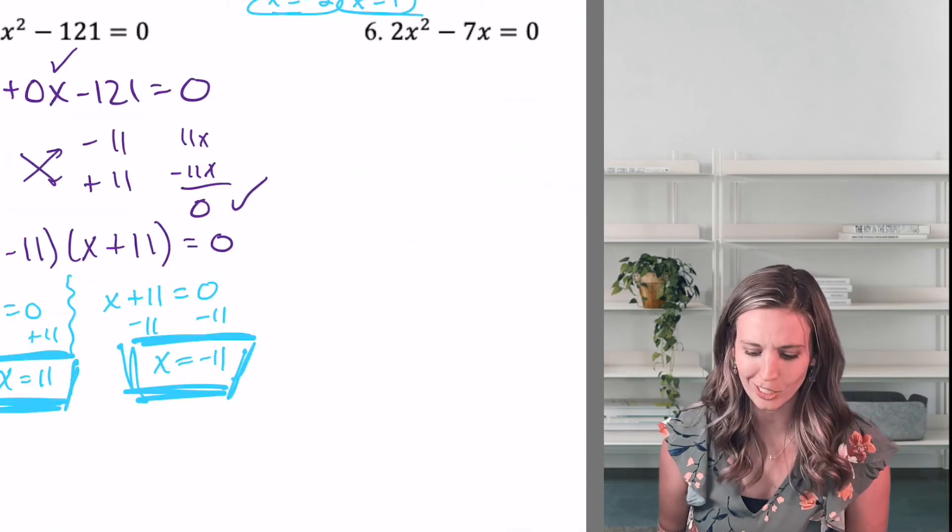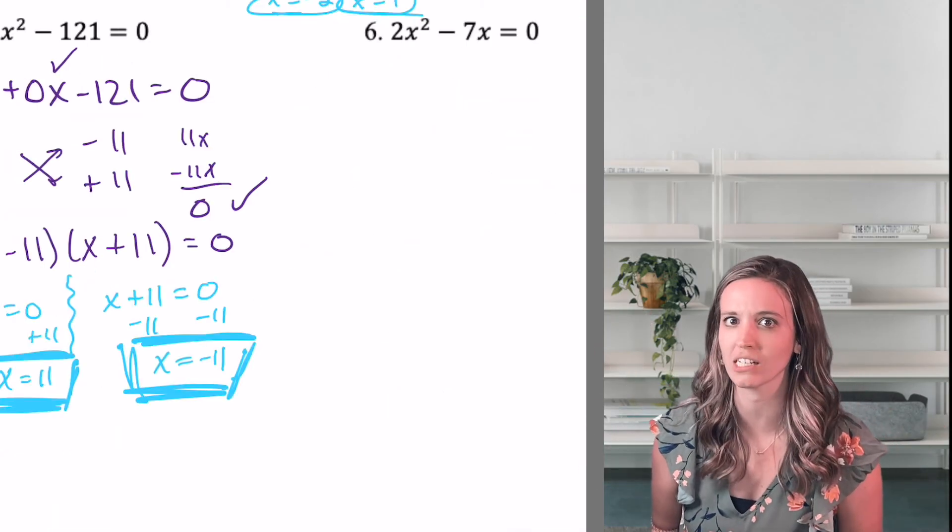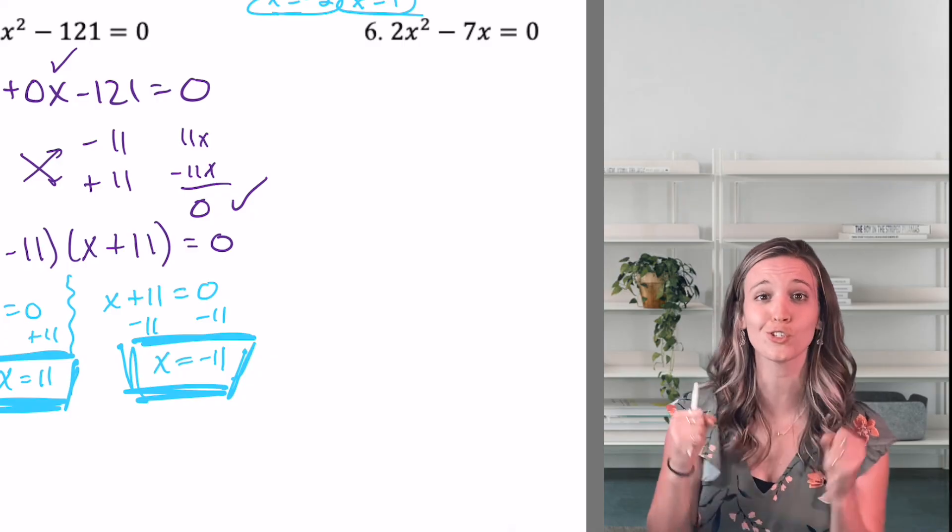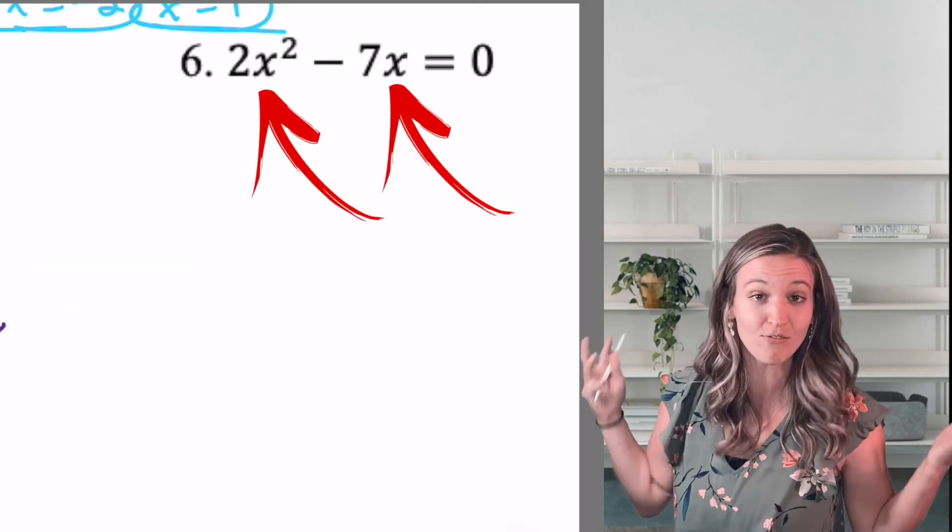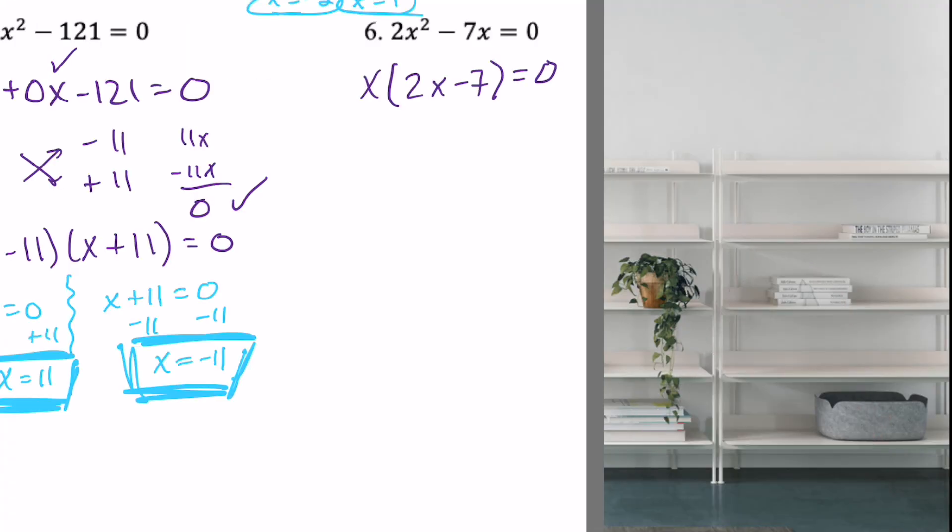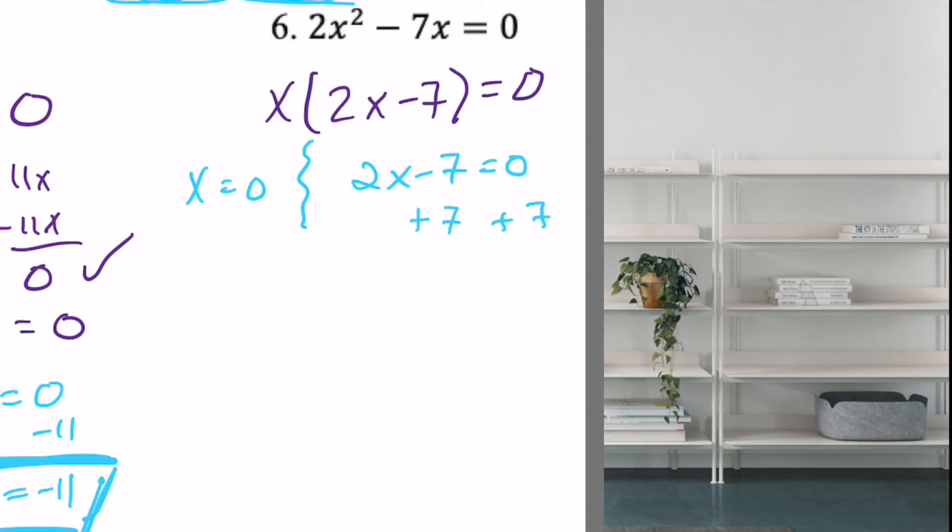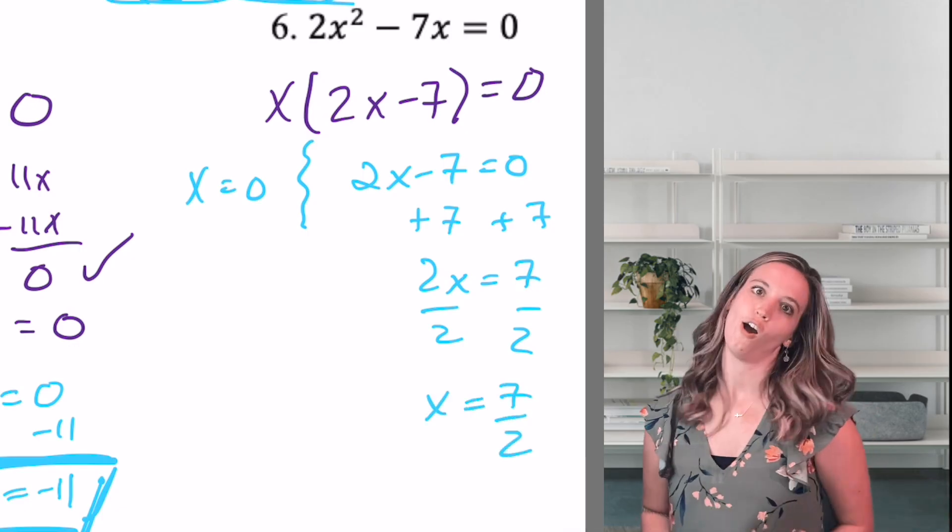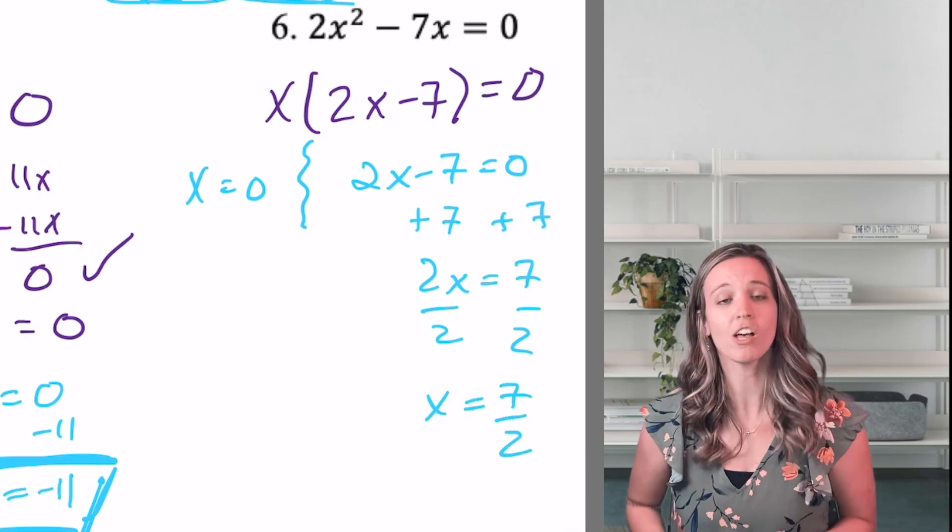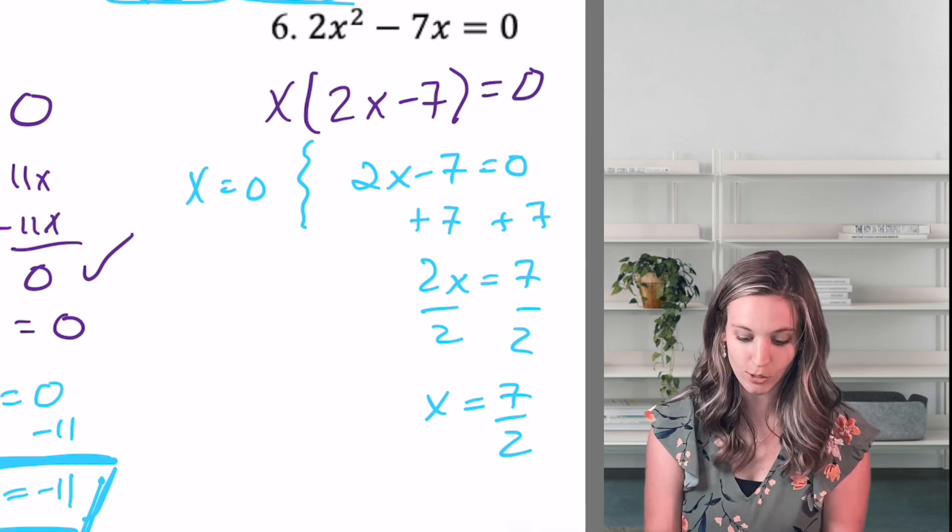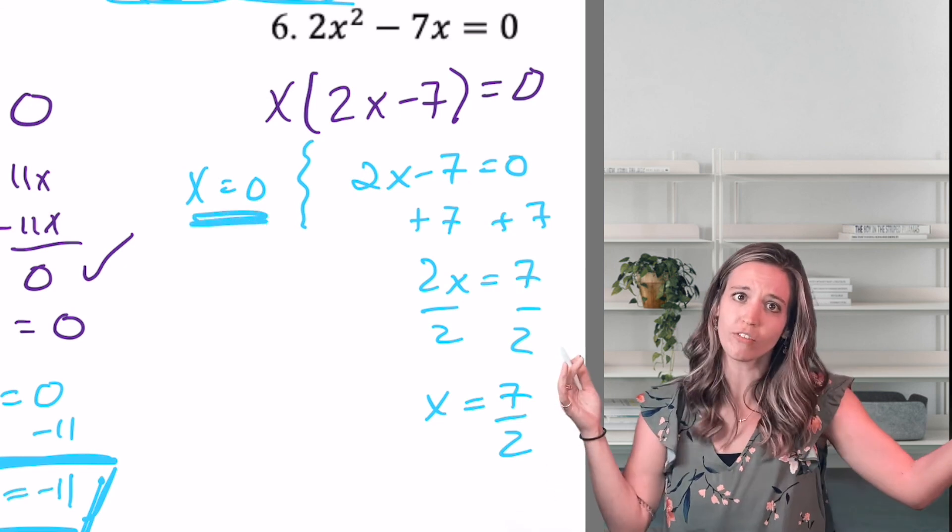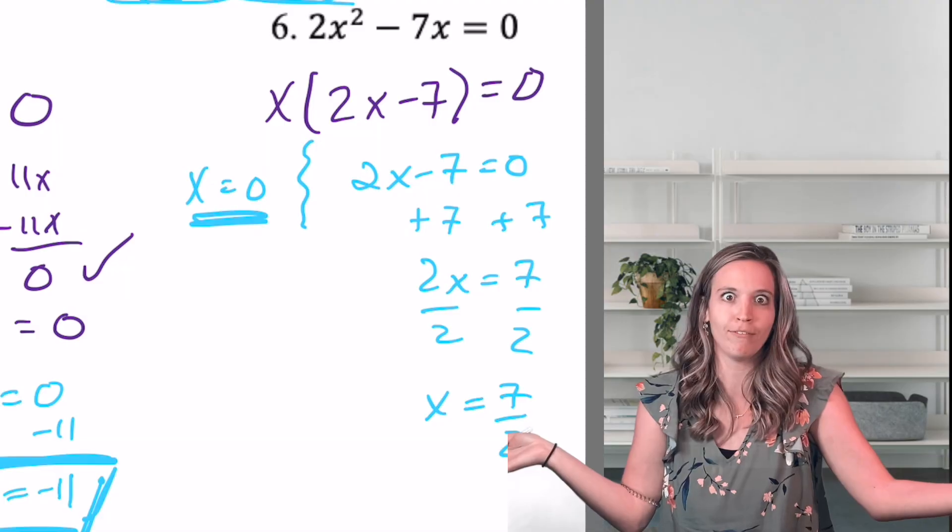Ooh, look at this last one. 2X squared minus 7X. Remember what Mrs. Peart says, start strong. What do they both have in common? An X. Factor out an X. All right, did you get X equals seven halves? Awesome. But did you get caught? Make sure you also said X equals zero, right? X was a factor. X equals zero. Didn't even have to solve.